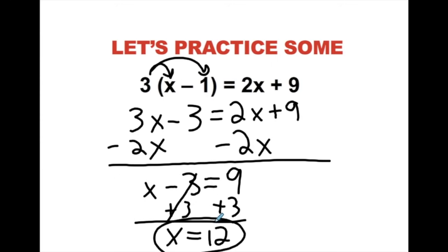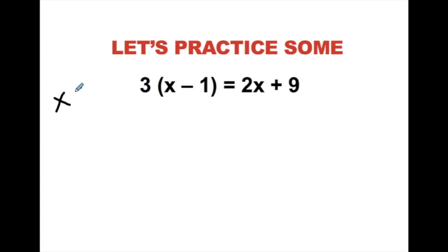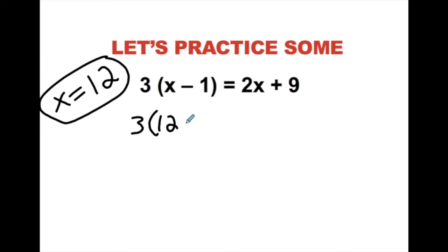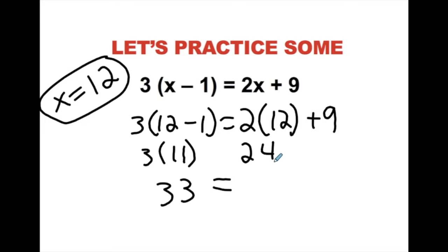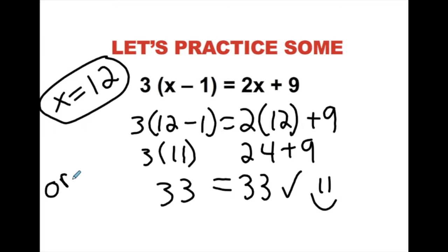That leaves x equals 12 as our solution. This is a one-solution problem — 12 is the only answer that works. Let's verify: 3 times (12 minus 1) equals 2 times 12 plus 9. 12 minus 1 is 11, and 3 times 11 gives 33. On the right side, 2 times 12 is 24, and 24 plus 9 equals 33 as well. Both sides equal 33, so x equals 12 is confirmed.